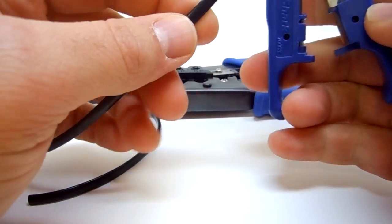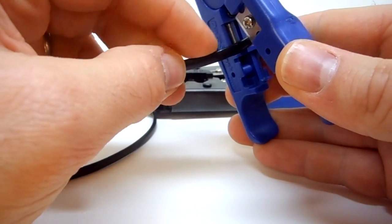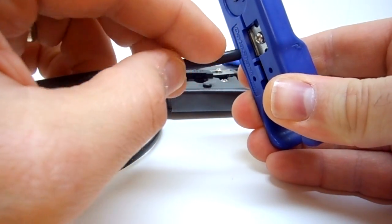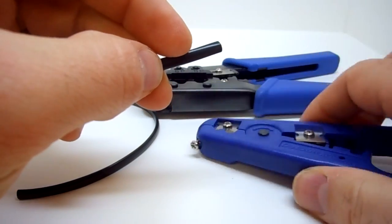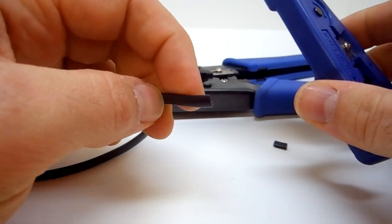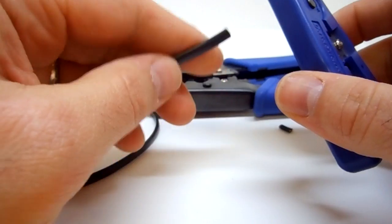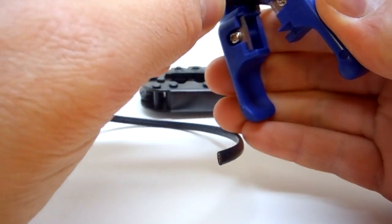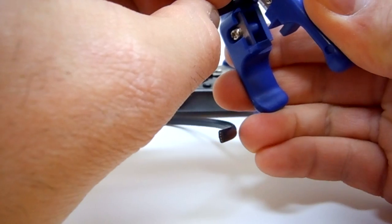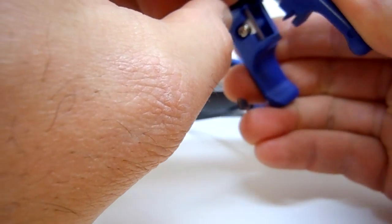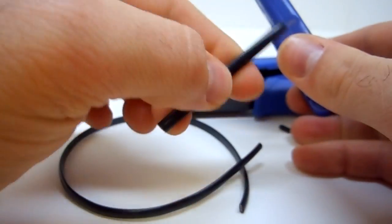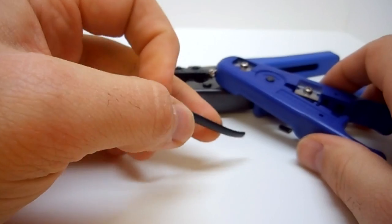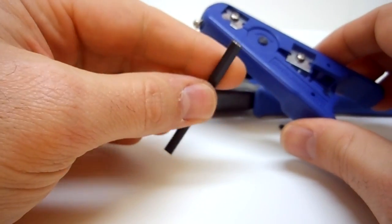I'll give you a demonstration on how the cutting tool works. You've got this little guide right here, and you want to make sure your cable is flat up against that to get a nice square 90 degree cut, and then you just simply squeeze. A little piece falls out and we have our clean 90 degree cut.